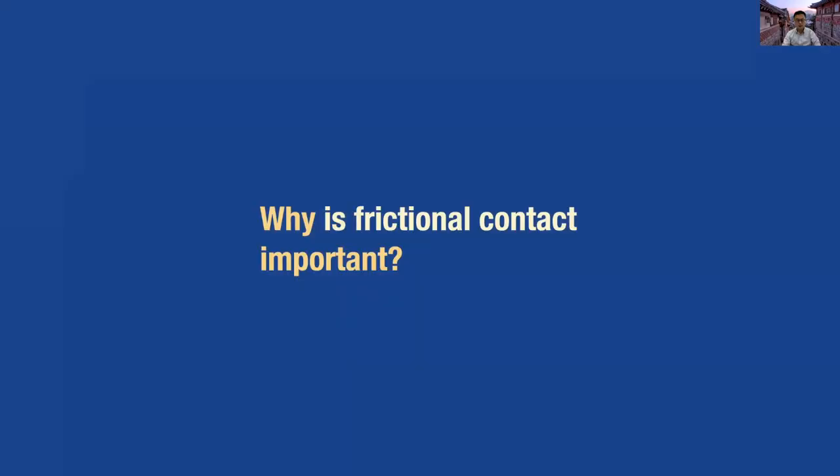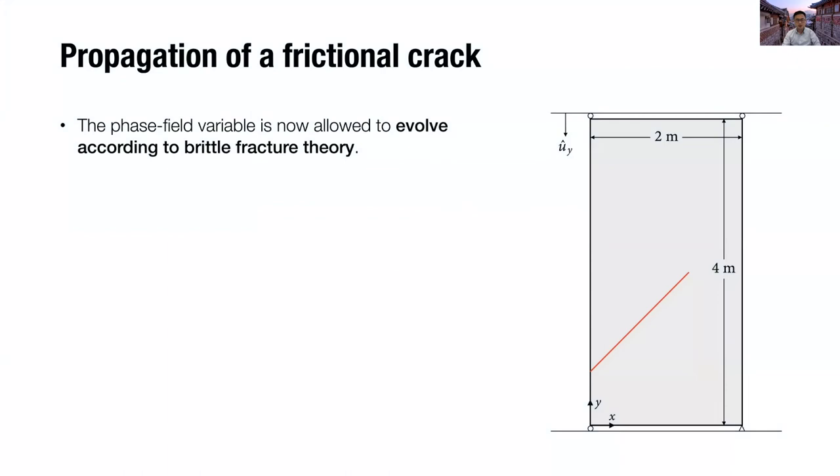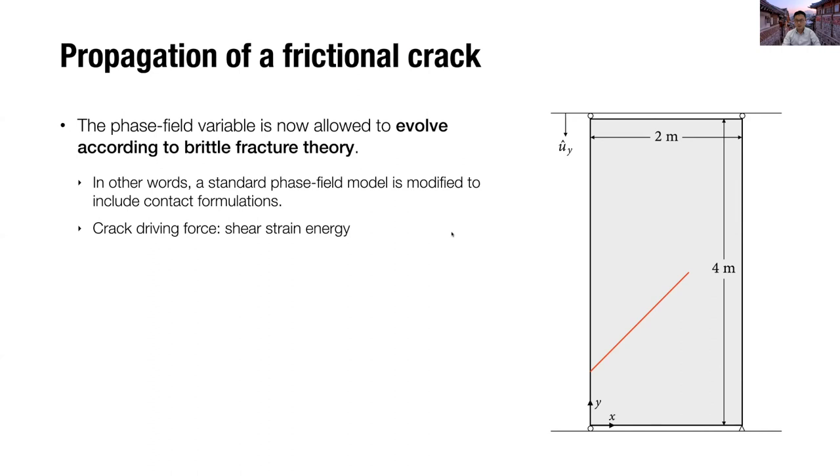Lastly, I'd like to show why frictional contact is important. For this purpose, I'd like to show a crack propagation example. So now the phase field variable is allowed to evolve according to Griffith fracture theory. In other words, a standard phase field model is modified to include our contact formulations. So crack driving force is shear strain energy, and the crack resistance is the shear fracture energy.